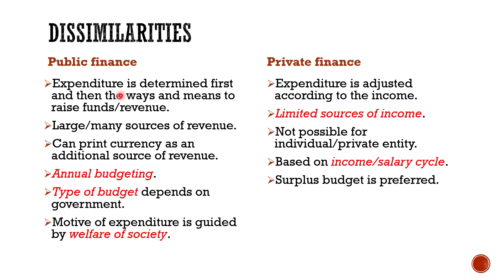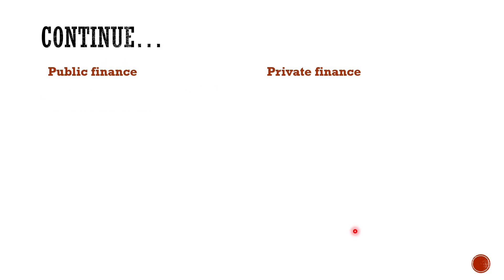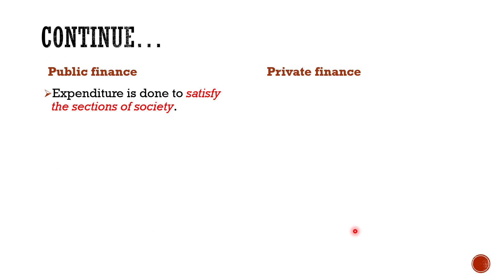Sixth, the motive of expenditure differs. In public finance, the motive is guided by welfare of society — when there is a welfare motive, government spends more than its income and runs a deficit budget. In private finance, the motive of expenditure is guided by the individual's profit.